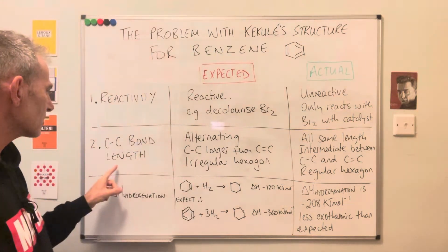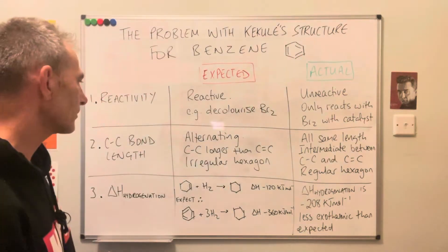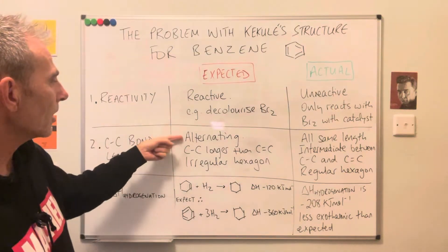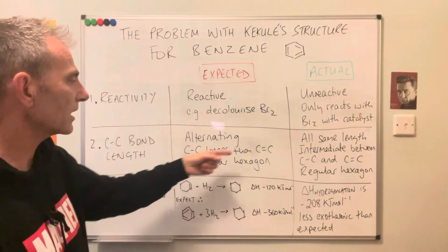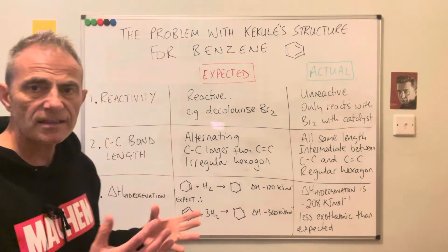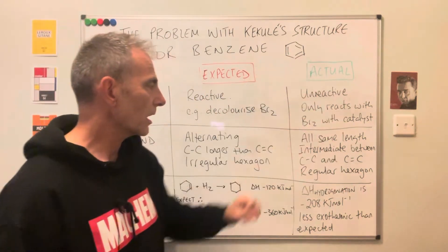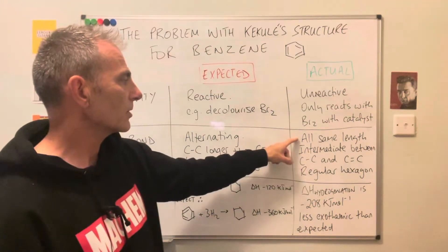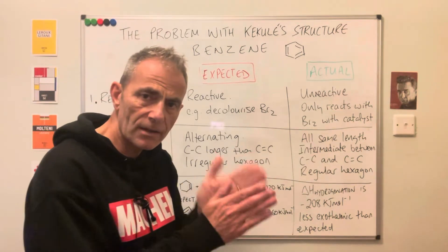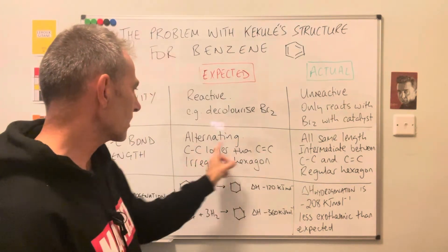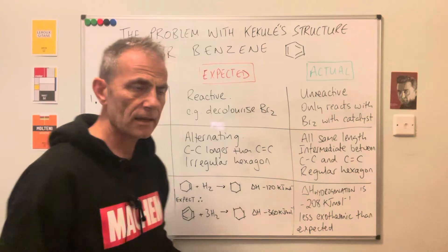Evidence number two is linked to the length of the carbon-carbon bonds around the ring. You would expect the carbon-carbon bond length to be alternating, because carbon-carbon single bonds are slightly longer than double bonds, and you'd therefore expect benzene to be an irregular hexagon. What was actually observed is that the carbon-carbon bond lengths are all the same, and they are intermediate — right in the middle between the lengths of the two types of carbon-carbon bonds. So benzene is actually a regular hexagon.